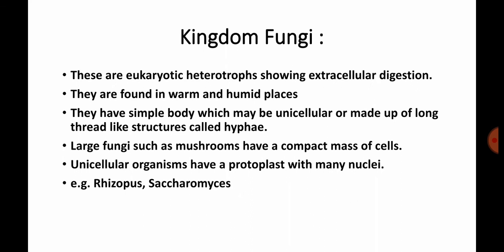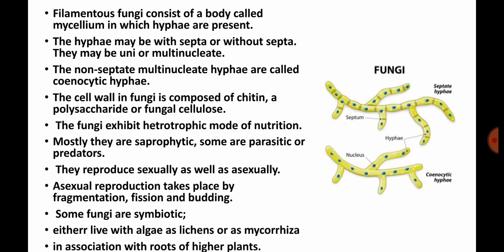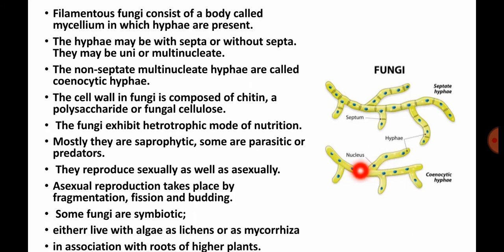Large fungi such as mushrooms appear umbrella-shaped. A compact mass of hyphae forms the body, and cells may contain protoplasts with many nuclei — for example, in Rhizopus. Saccharomyces is a unicellular example. For filamentous fungi, the body is called mycelium, which is made up of hyphae.